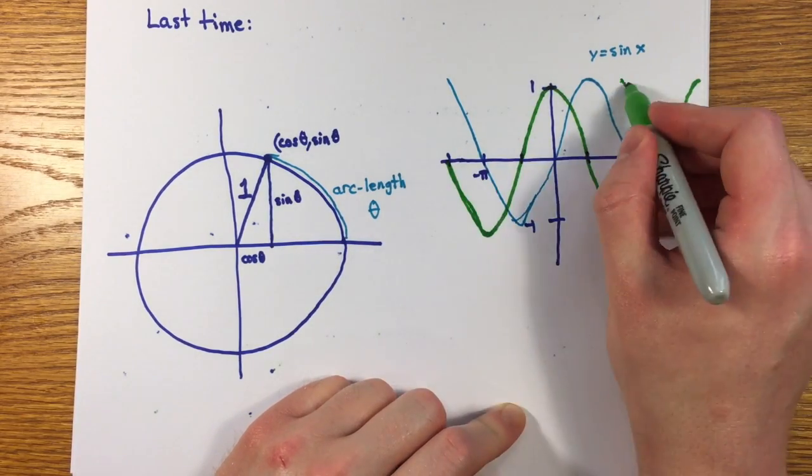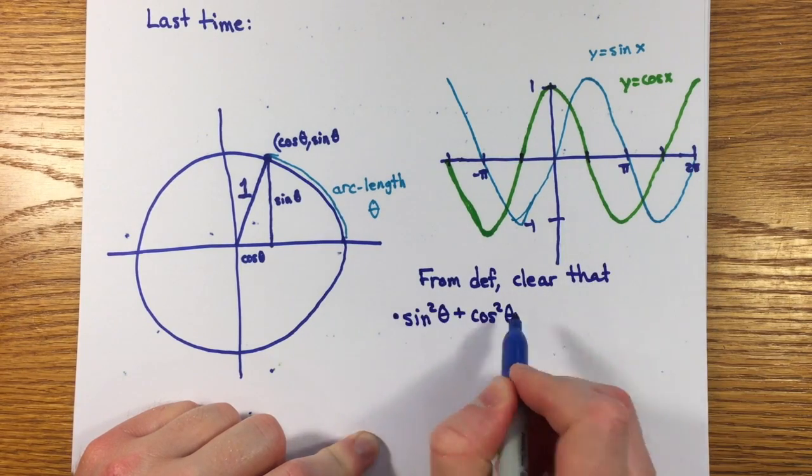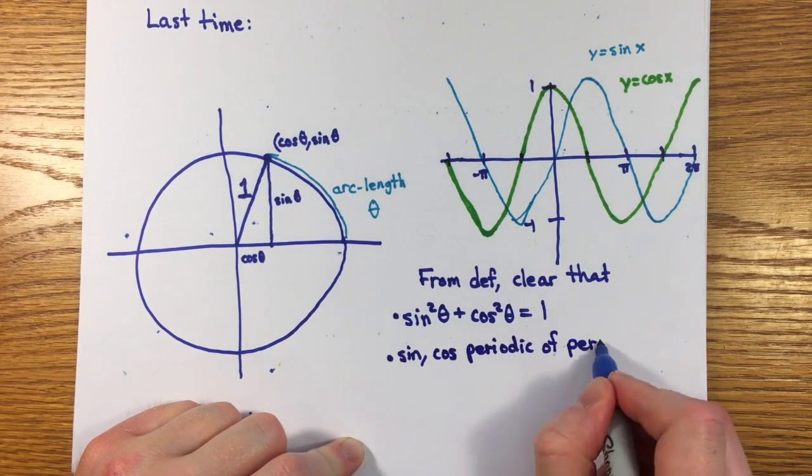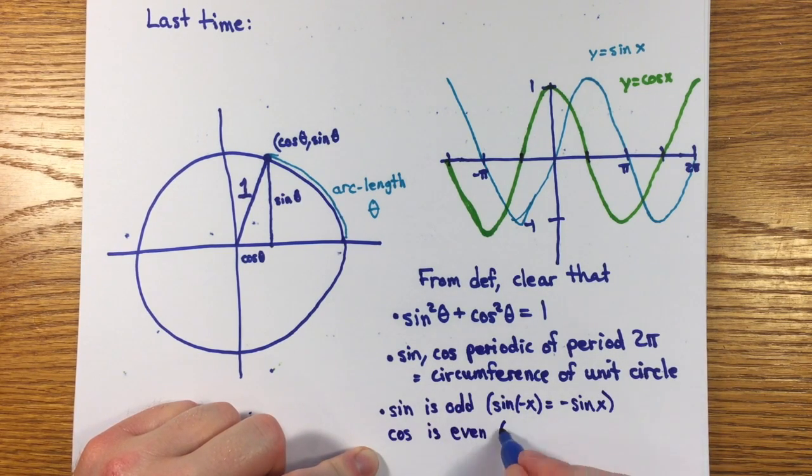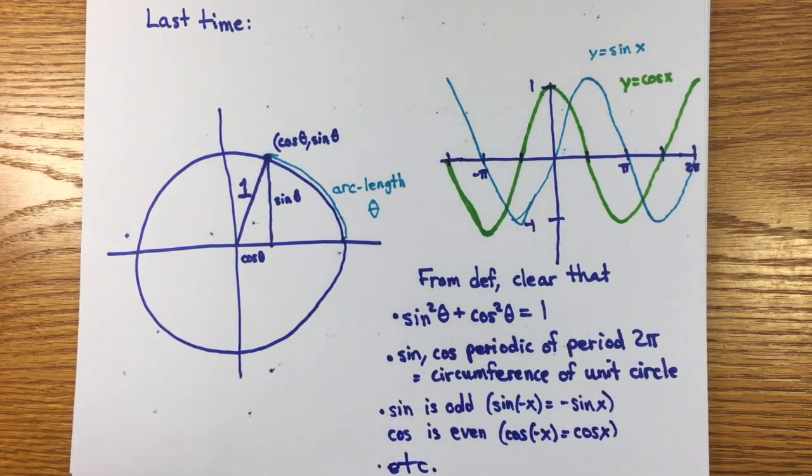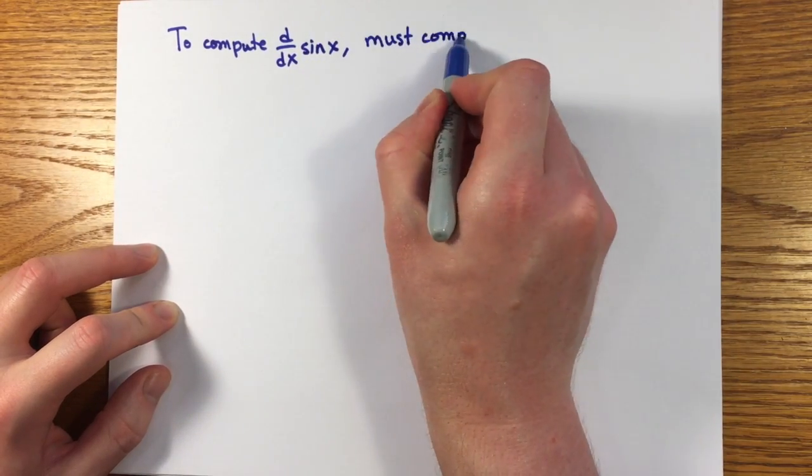The unit circle definition makes most of the important properties of this function obvious, like the relationship sine squared theta plus cosine squared theta equals one, or that they're periodic of period two pi, or that sine is odd and cosine is even. The difficulty comes in trying to show that these functions are differentiable, and for example, the derivative of sine x is cosine x.